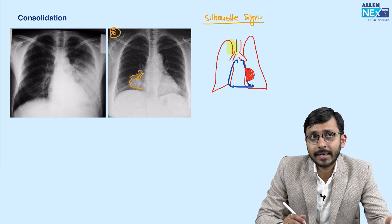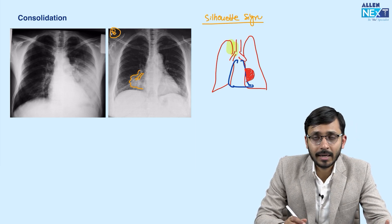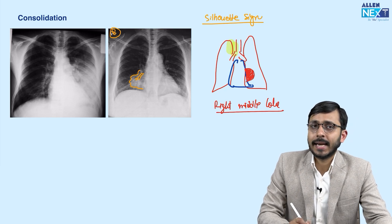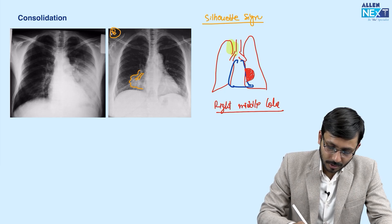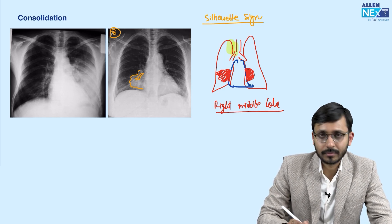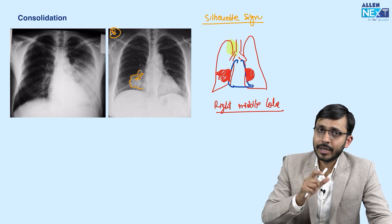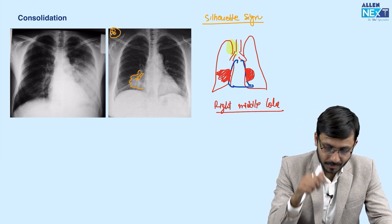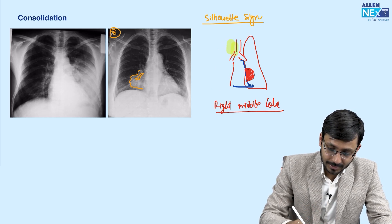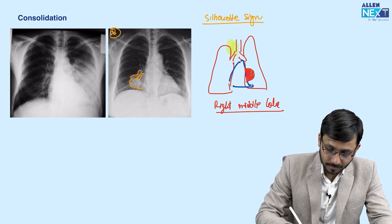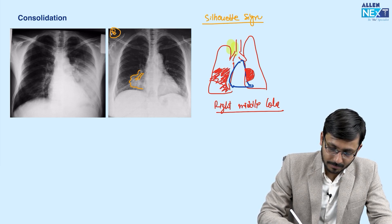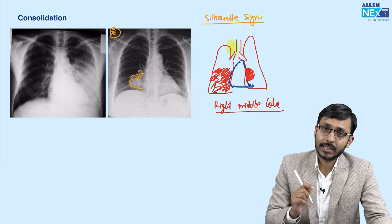For example, if it is a right middle lobe pathology — we know the right middle lobe is in anatomical contact with the right heart border — so any pathology of the right middle lobe will obscure the right heart border. If it is a pathology not in contiguity with the mediastinal structure, it will not obscure its border. For instance, a pathology of the right lower lobe will not obscure the right heart border. This is a very important sign — it tells you where the pathology actually is.